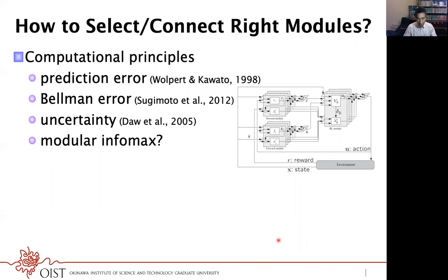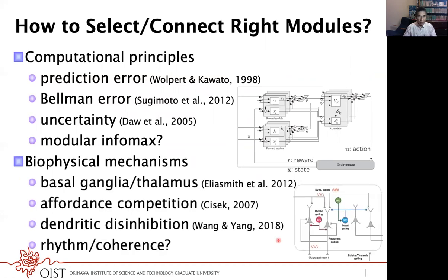It is a very interesting topic how appropriate choice of modules is implemented in our brain. For example, Judging and colleagues proposed that different interneurons — inhibitory interneurons in the cortex — would be used for gating input to pyramidal neurons or gating output from pyramidal neurons. I think this is a very interesting suggestion.